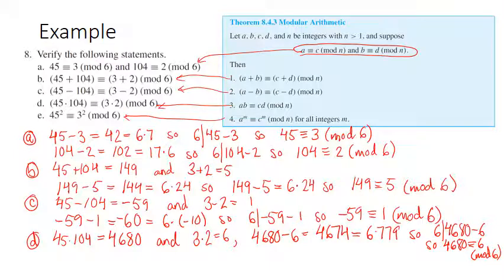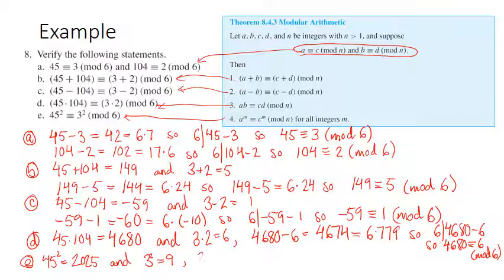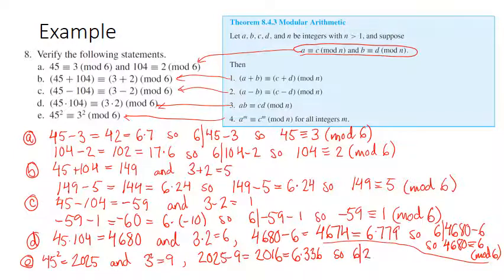And finally, 45 squared is 2,025, and 3 squared is 9. 2,025 minus 9 is 2,016, and dividing by 6 gives 336. So 6 does divide this difference, meaning 2,025 is indeed congruent to 9 mod 6. We've confirmed that all four statements in the theorem are true when A is 45, C is 3, B is 104, and D is 2.